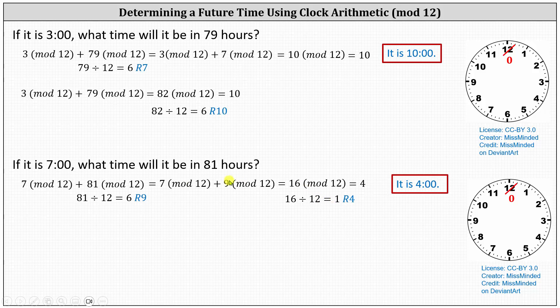Using the clock, we would start with the hour hand on the seven and move ahead 81 hours, which would be six complete rotations plus nine additional hours. Let's go ahead and show that as well.